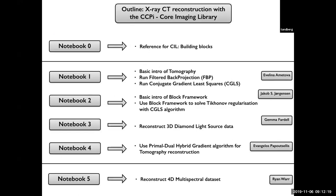And we will start with Evelina that will introduce a little bit of tomography, run FBP reconstruction and CGLS. Then we will go to Tikhonov regularization and introduce the block framework. Then we will run real data from the diamond light source. And then go to the PDHG and run total variation reconstruction. The afternoon session we will do total variation reconstruction for multispectral data. So I'm going to pass it on to CIL.